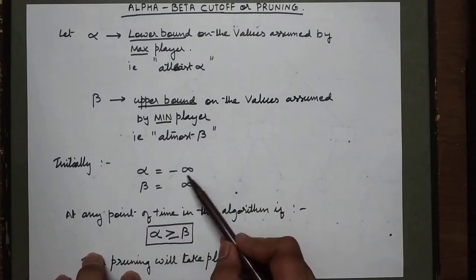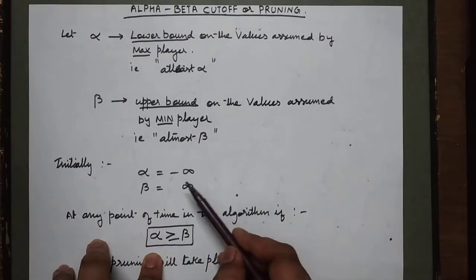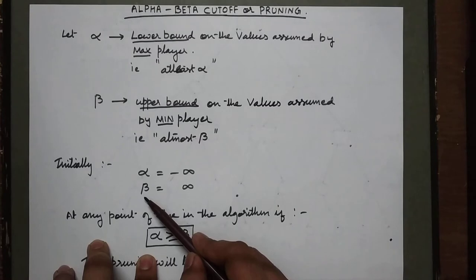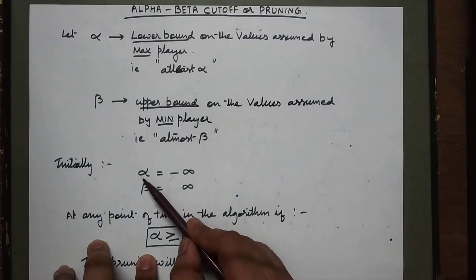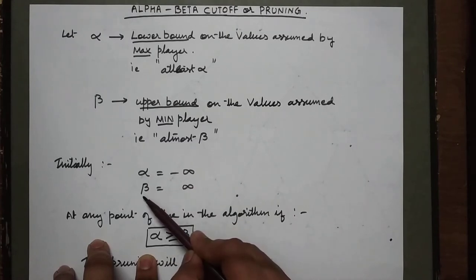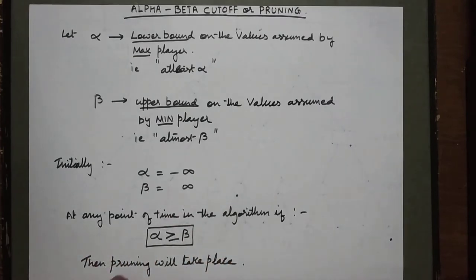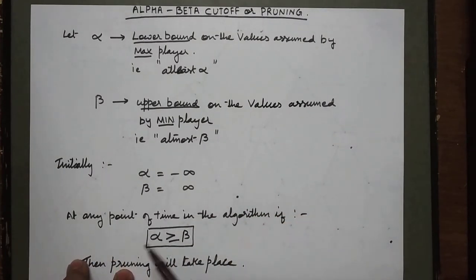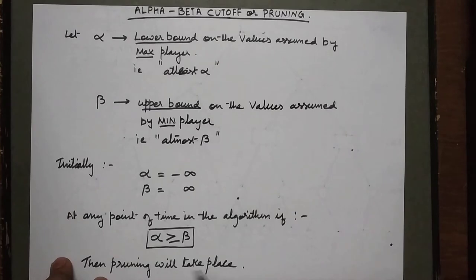Initially, alpha is set to minus infinity because alpha is the lower bound — the minimum possible lower bound is minus infinity. Similarly, beta is the upper bound, so the maximum possible upper bound is infinity. These are the initial values of alpha and beta for each node. As we continue computation, at any point if for any node alpha is greater than or equal to beta, then the other branches will be pruned.